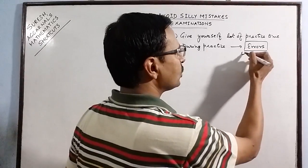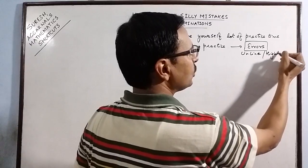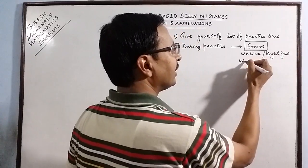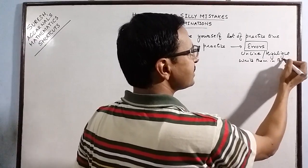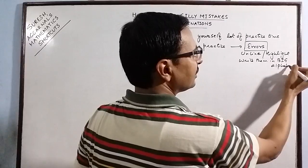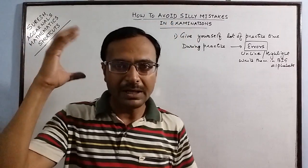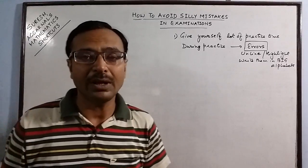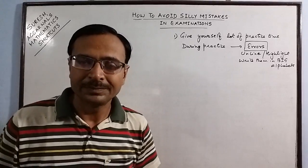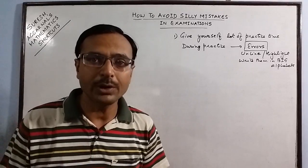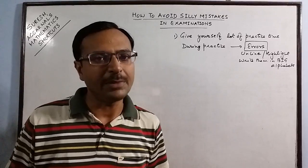We can underline those errors. We can highlight using a highlighter. We can write them in big alphabets so that it creates a map in the mind that you will remember for life. So these errors are not to be neglected. You have to keep a record of what kind of errors you are making while practicing mathematics.